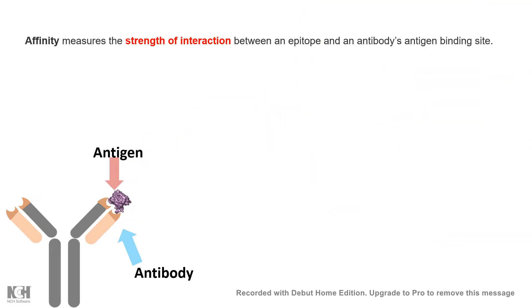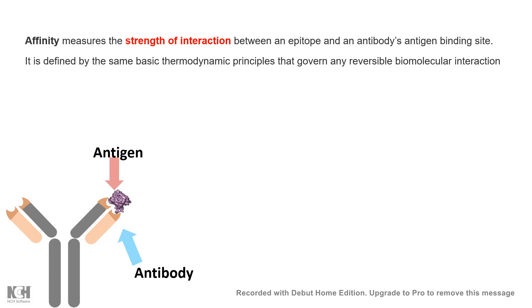Affinity is a measure of the strength of interaction between the epitope — that is, the specific antigenic determinant — and the antibody's antigen binding site. The binding strength between these two is known as affinity. Affinity can be described using simple thermodynamic principles that govern biomolecular reversible interactions. An antigen and antibody form a complex, and this complex can also be broken down, which is why the interaction is reversible.